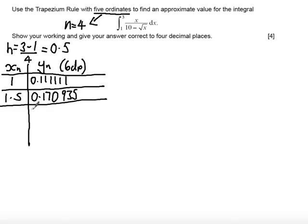Add 0.5 to our last ordinate to get our next ordinate, and we get that we're going to substitute 2 into the function. So we get 0.232943 as our third ordinate.